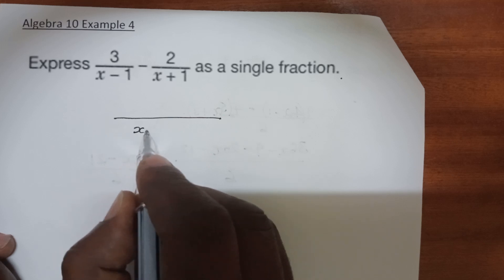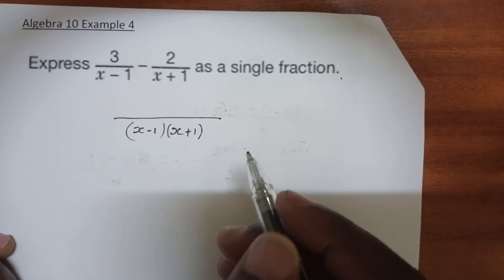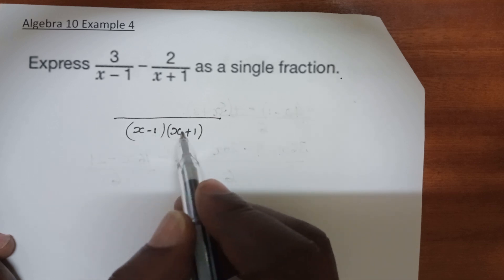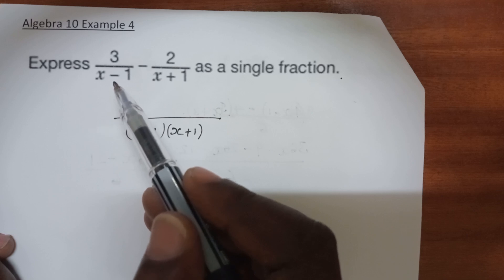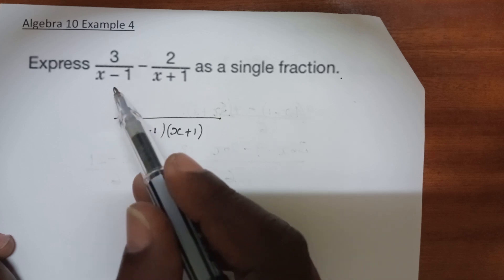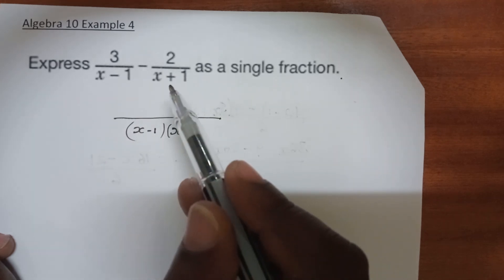We have (x-1)(x+1) as the LCM, such that when we divide this LCM by either one of the denominators, we get the other. So in other words, this denominator divided by x minus 1 gives us x plus 1.